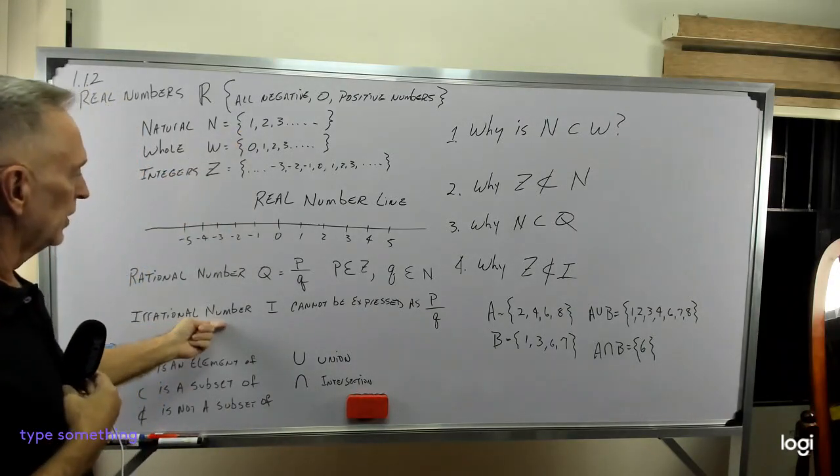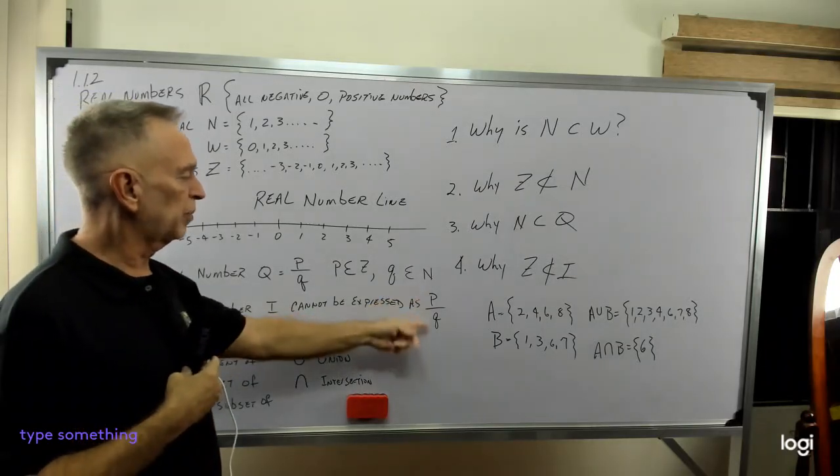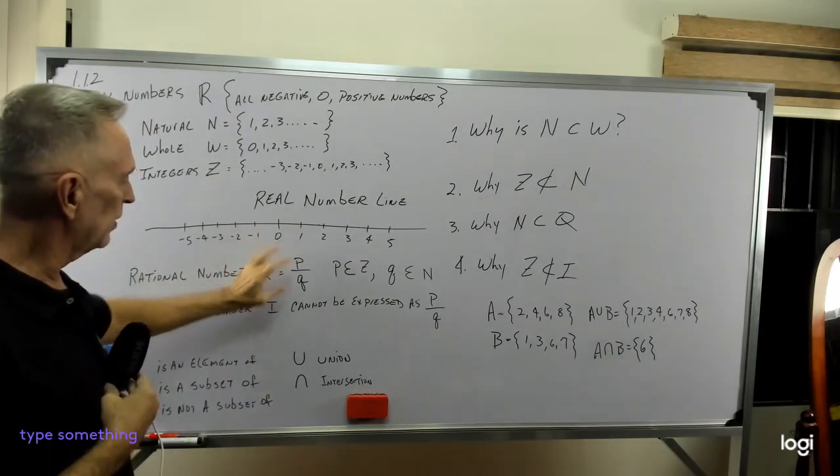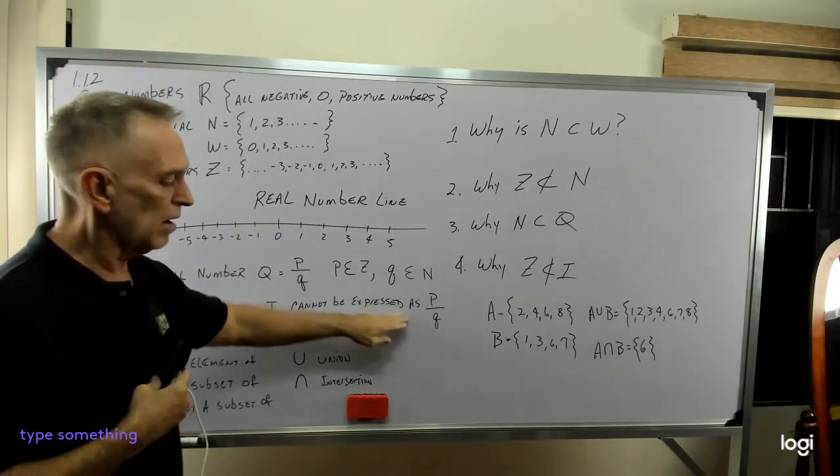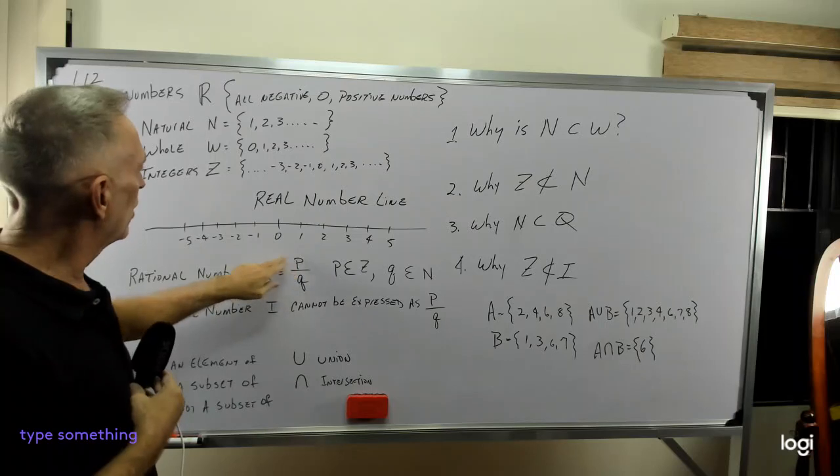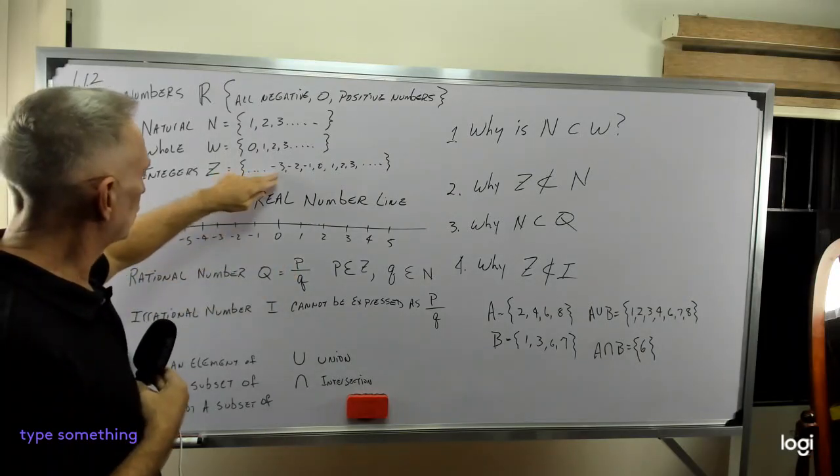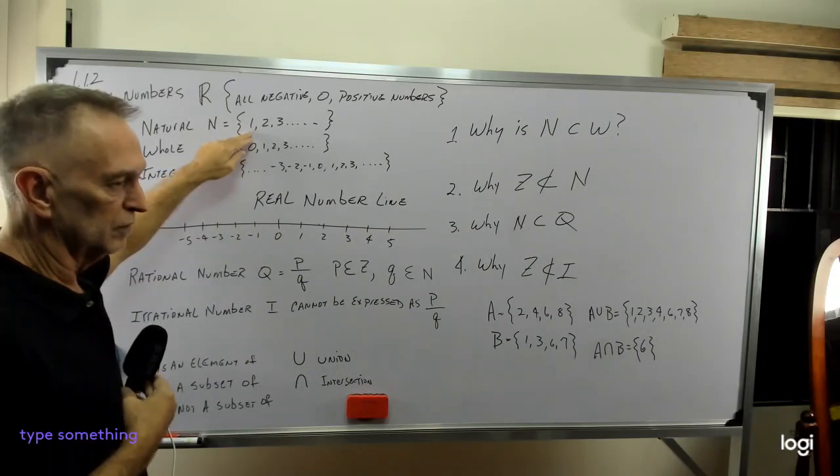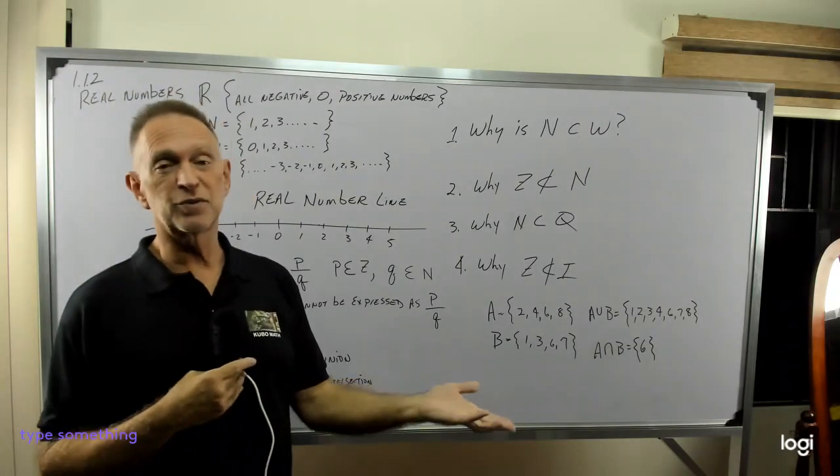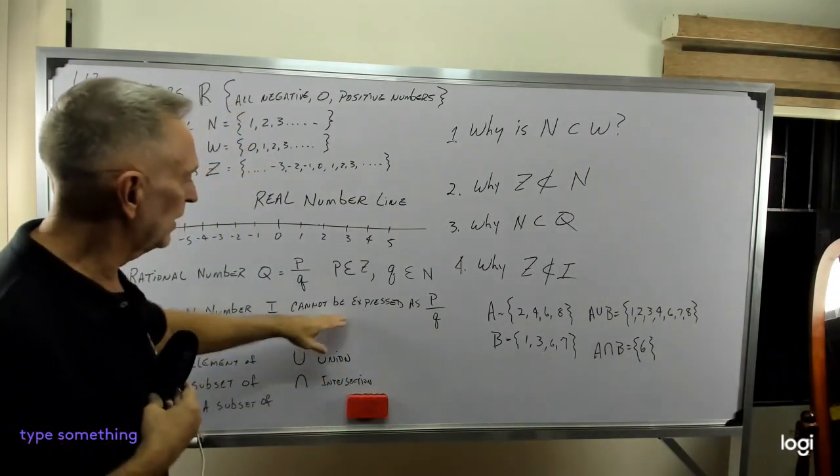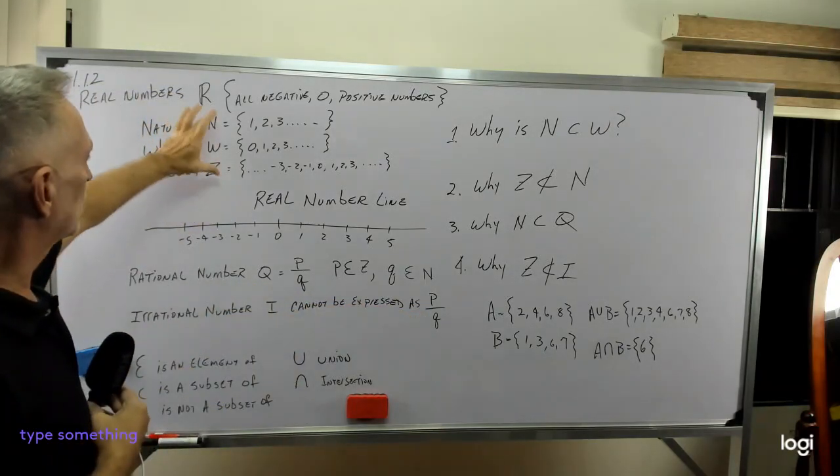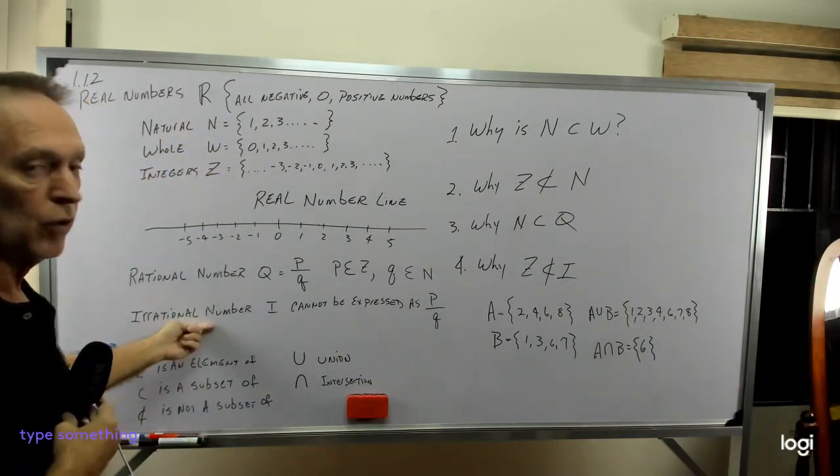An irrational number is a number that cannot be expressed as p over q. So rational could be expressed by p over q and irrational cannot. Can you think of an example that could not be expressed by a number that was an integer divided by a natural number? What about square root of two, square root of three, square root of seventeen? None of those can be expressed as a fraction like this, dealing with an integer divided by a natural number. So they're called irrational.